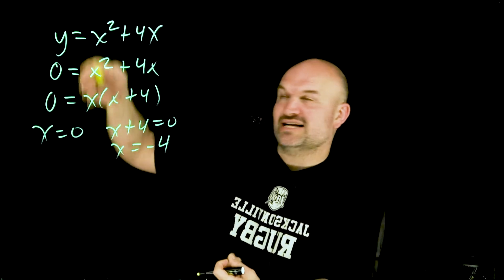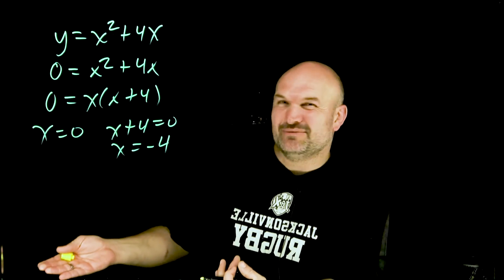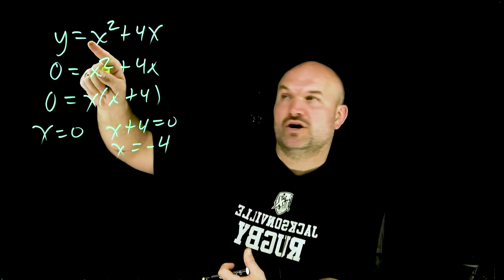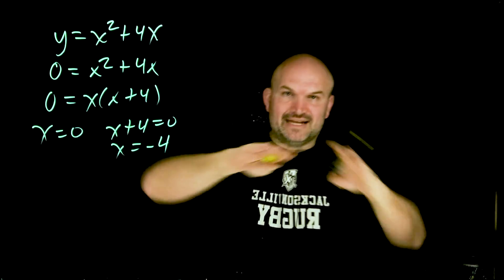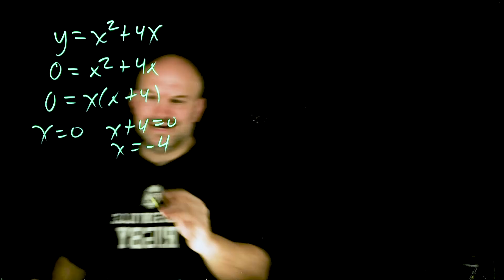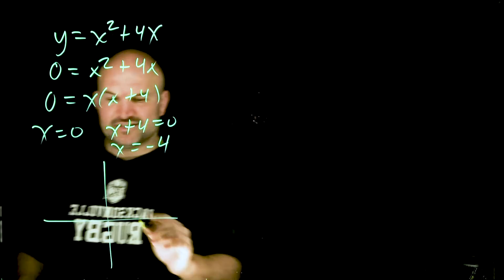So when we're solving for x when y is equal to zero, these are going to represent our x-intercepts. The only other thing we need to understand or look at is what our coefficient of our x squared is. If that's positive, we know our graph opens up. If it's negative, we know our graph opens down.